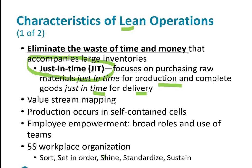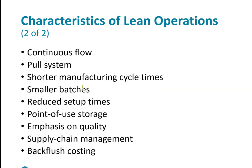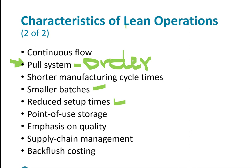5S workplace organization — sort, set in order, shine, standardize — are all production processes in lean operations. The pull system means production doesn't start until an order is received. For example, ordering Kobe Bryant tennis shoes meant waiting because production didn't start until a certain number were ordered — assembled across multiple countries — which saved on cost. Using shorter batches and reduced setup times are also part of lean operations.